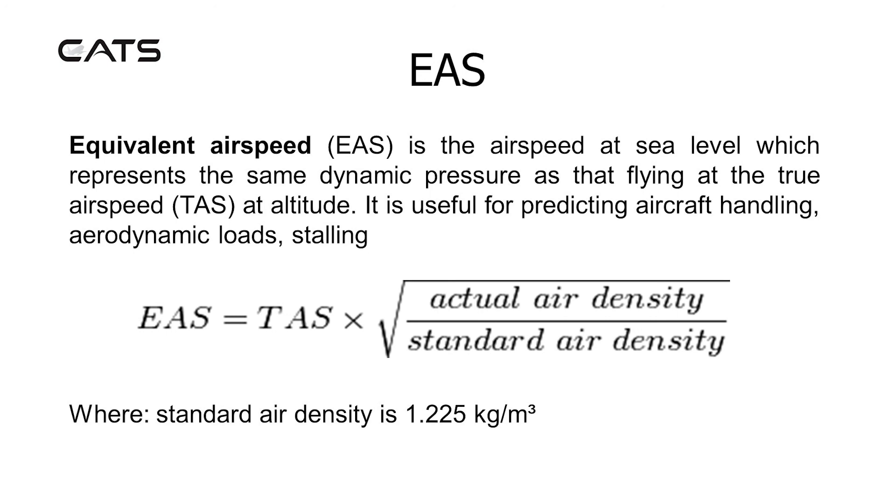Equivalent airspeed. Equivalent airspeed is the airspeed at sea level which represents the same dynamic pressure as that flying at the true airspeed at altitude. It's useful for predicting aircraft handling, aerodynamic loads, and stalling. There's a formula for it: equivalent airspeed equals true airspeed multiplied by the square root of the actual air density over standard air density. Standard air density is typically 1.225 kilograms per cubic meter.